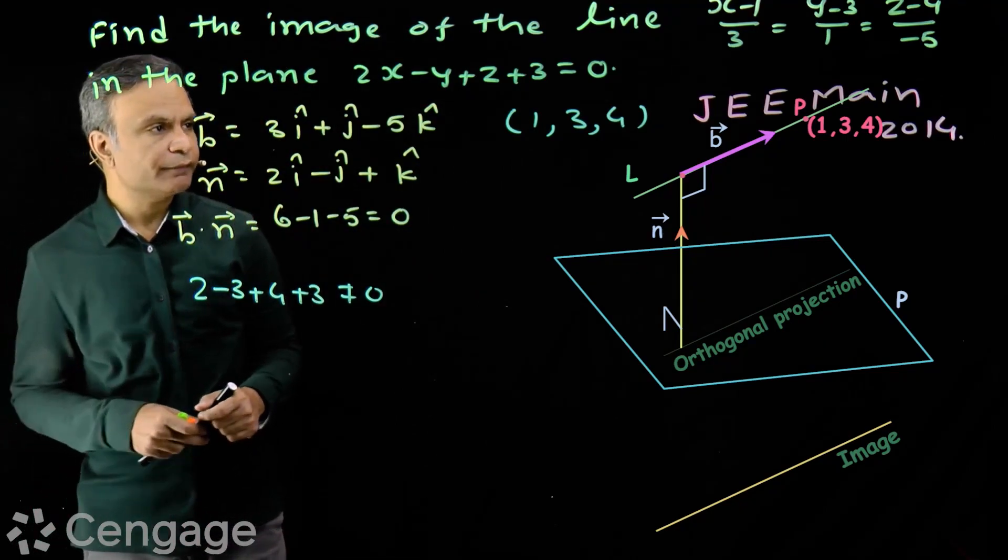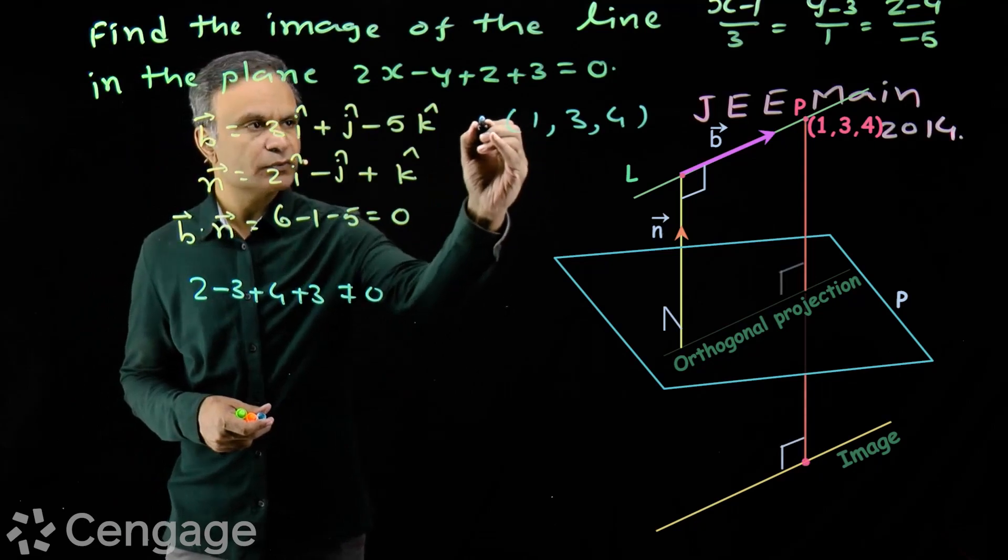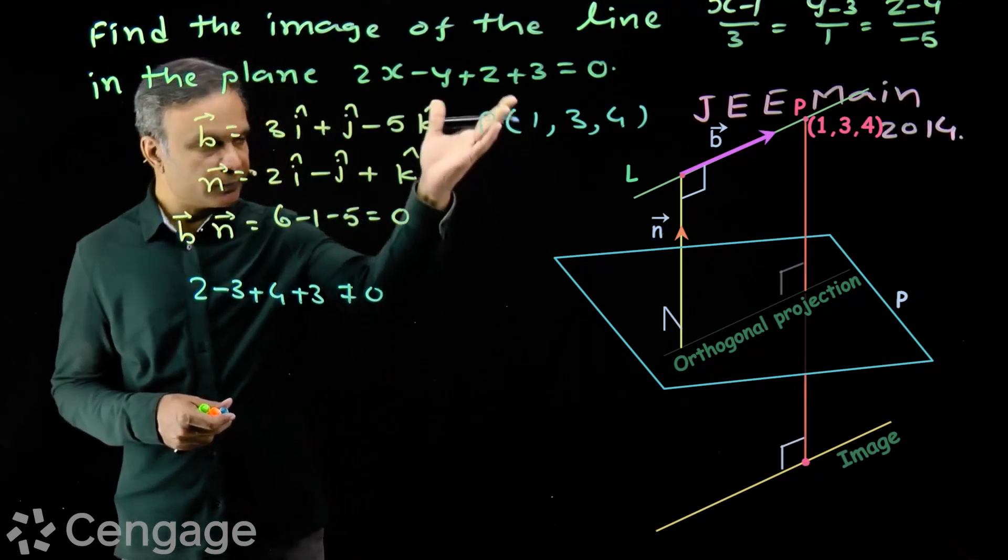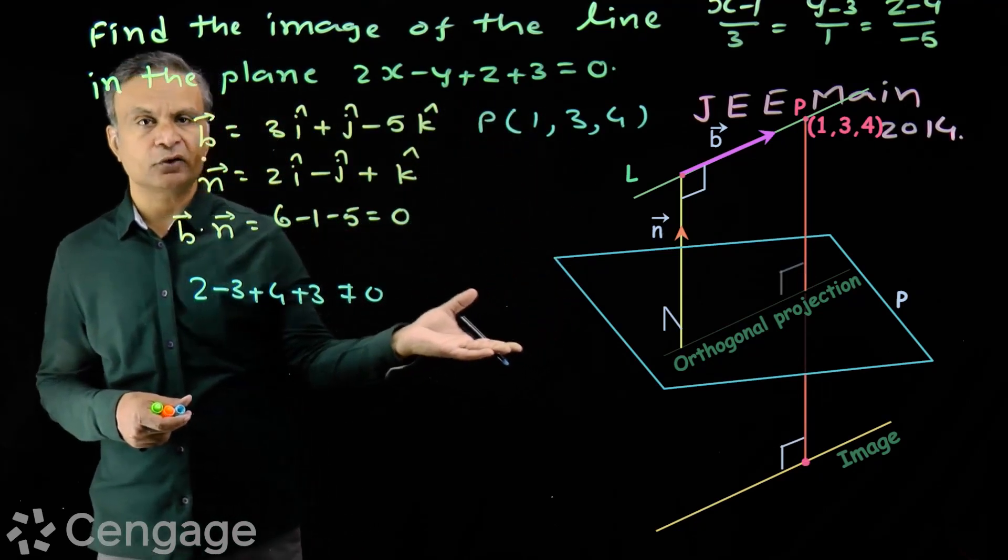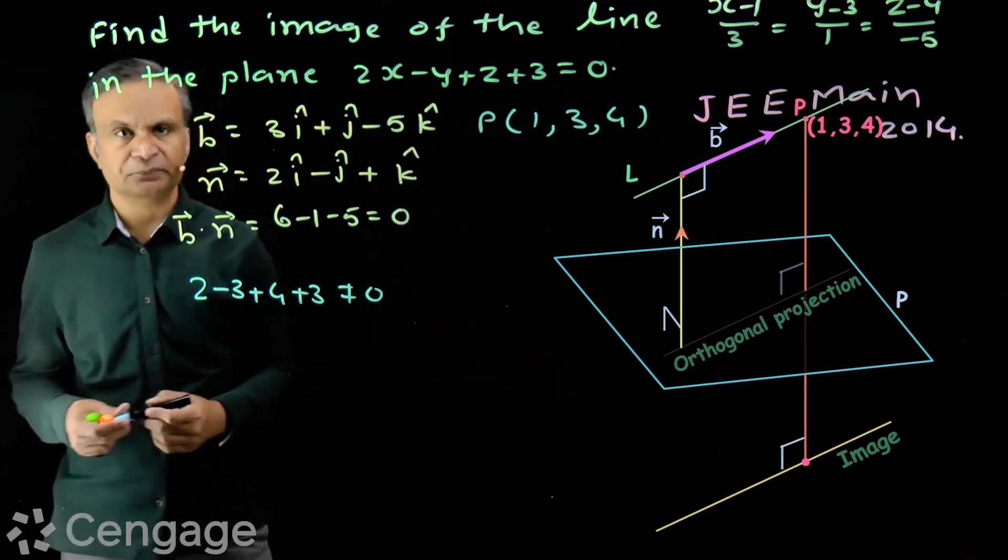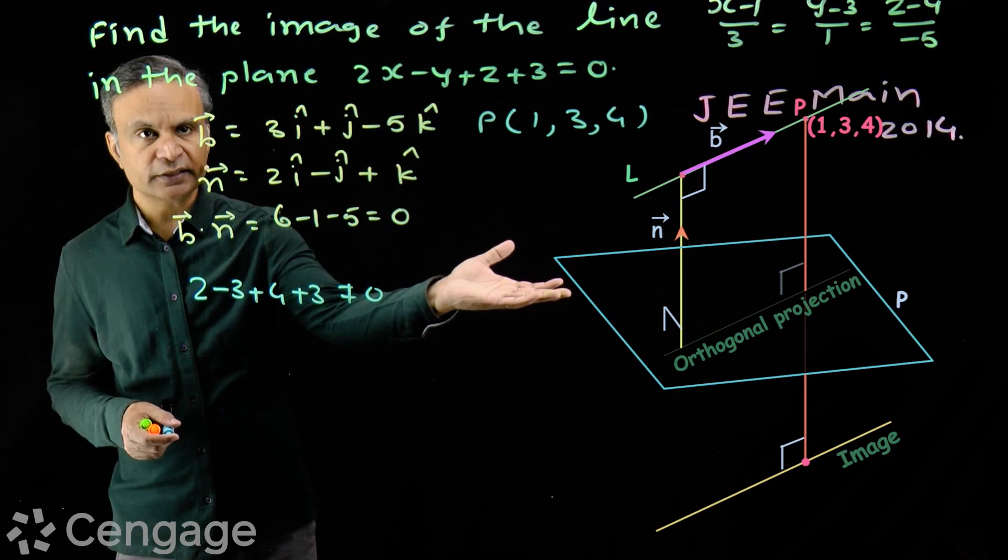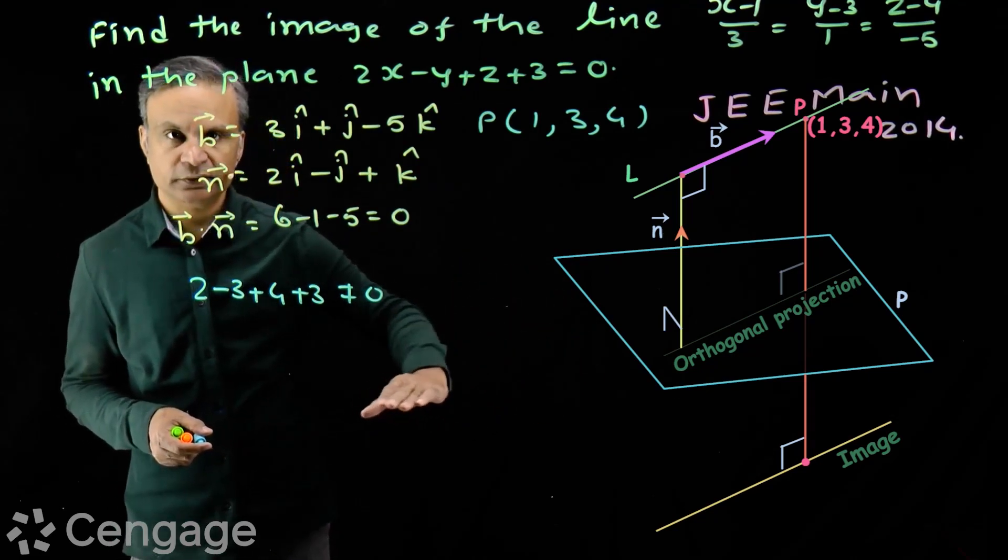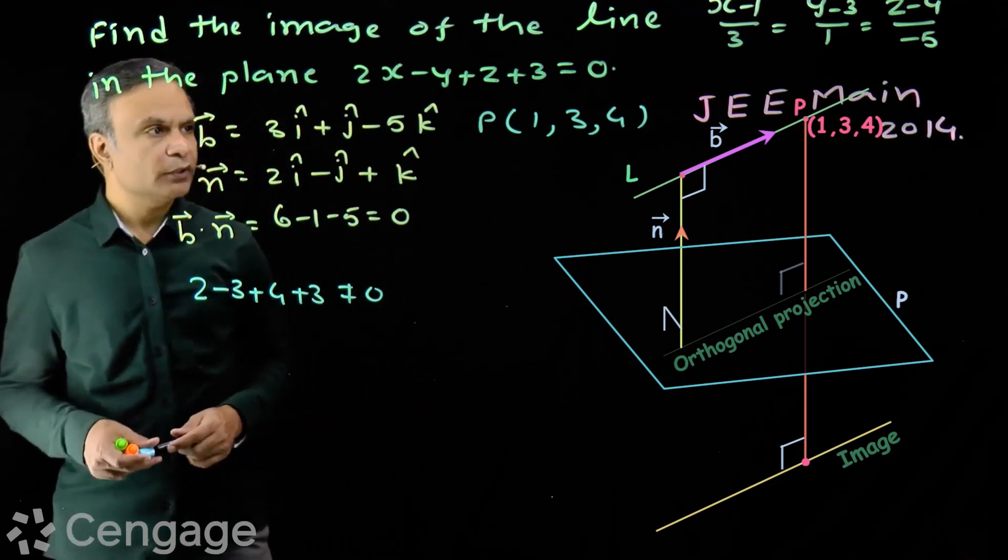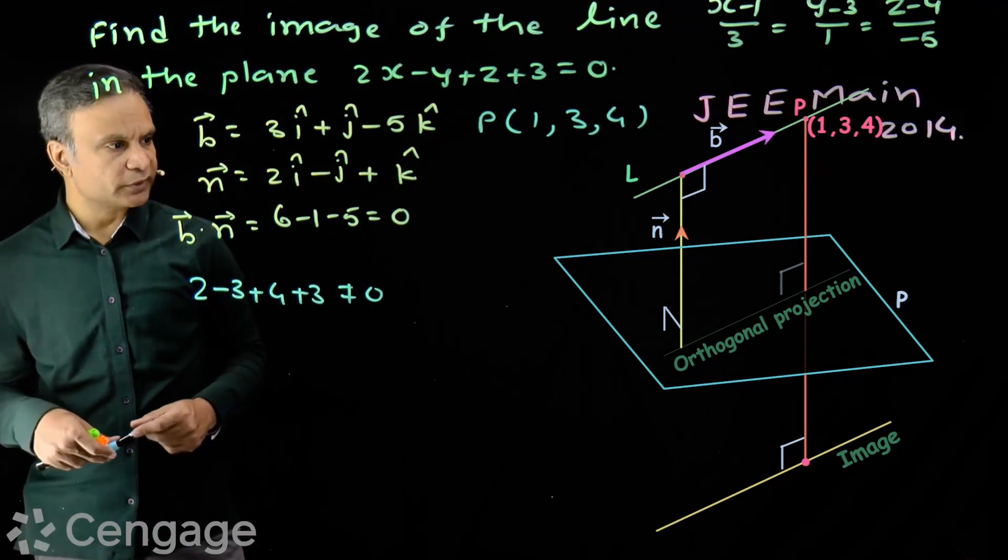It's simple. We find the image of this point. Image of this point in the plane or reflection of this point in the plane. Hame is point ka is plane mein reflection nikalenge. It will lie on the image line. Yeh line ke upar hoga na. Iske liye humare paas formula hai.